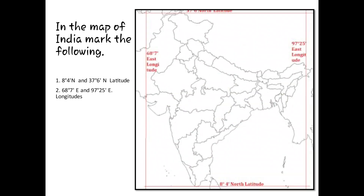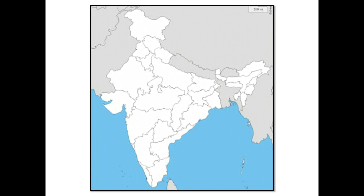In the fourth map, we are supposed to mark the latitudes and longitudes of India: 8°4'N and 37°6'N latitude, and 68°7'E and 97°25'E longitude. All four are marked with a red line, and you are supposed to mark them in a plain map. This is compulsory for the examination.